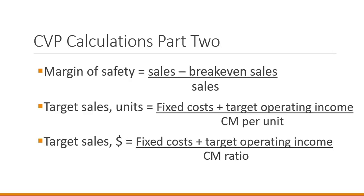Target sales: in calculating breakeven, we don't actually have the goal of just breaking even — we have the goal of generating profit. The breakeven calculation gives us the minimum level of sales needed to cover expenses, but we want to go beyond that. We probably have a target income level we want to achieve, so target sales calculations help us find what sales levels we need to achieve a particular target operating income. These formulas are very similar to the breakeven sales formulas.